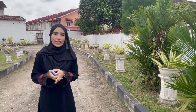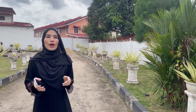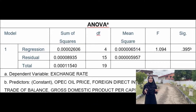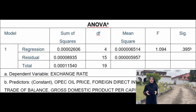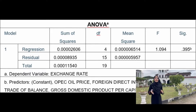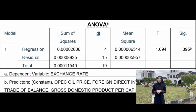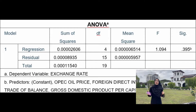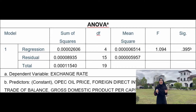ANOVA is used to compare differences among more than two groups by looking at variation in the data and where that variation is found. For the regression, the sum of squares is 0.00002606 whereas for residual it is 0.00008935, giving a total sum of squares of 0.00011540. The degrees of freedom for regression is 4, residual is 15, and total is 19. The mean square for regression is 0.00009514 and for residual is 0.00005957.